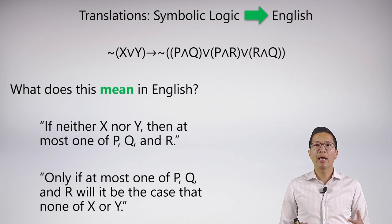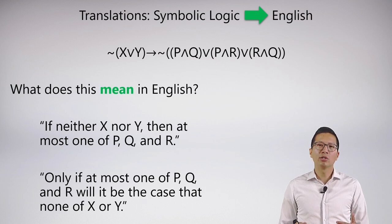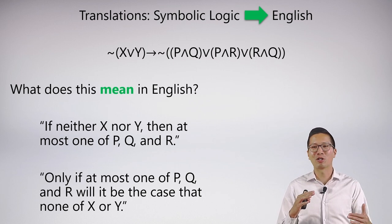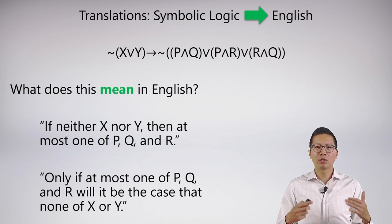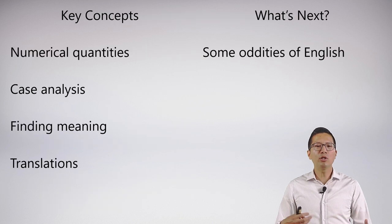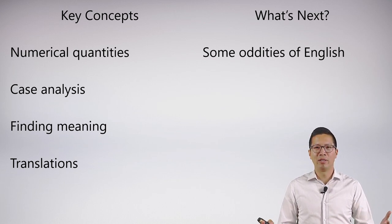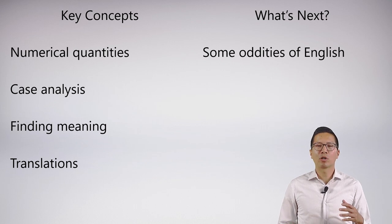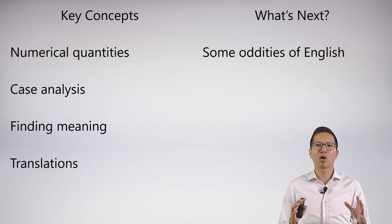This translation ability is really powerful — we've been learning to go both ways, even though I haven't stressed translating from symbolic logic to English. By the end of this unit, once you've practiced, you'll actually be able to read symbolic sentences and immediately see their meaning in English — a really powerful skill. In this video we covered numerical quantities, focusing on case analysis and meaning. Next, we'll be looking at some oddities of English to round out our ability to symbolize more complex and subtle English sentences.